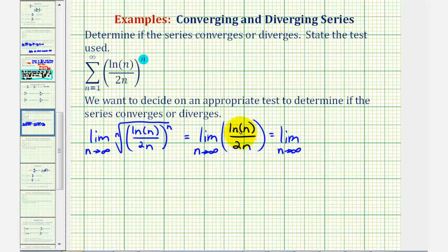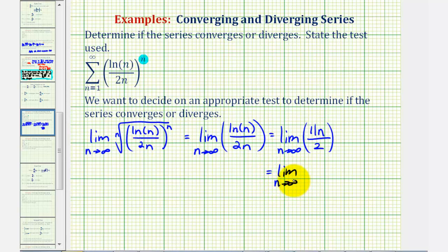The derivative of natural log n with respect to n is one divided by n, and the derivative of 2n with respect to n is just two. This simplifies to the limit as n approaches infinity of one divided by 2n. As n approaches infinity, the numerator stays one but the denominator increases without bound, so this limit is equal to zero.